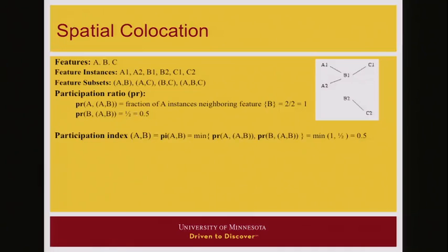Once we have participation ratio, you can define participation index because ratio was asymmetric and index is symmetric. So we basically take the minimum of two participation ratio to define participation index. And in this case, you take minimum of 1 and half and it becomes 0.5. So participation index for A, B is 0.5. Similarly, you can compute participation index for BC. And in this case, notice that for participation ratio for B is 1, C is 1 and minimum is 1.